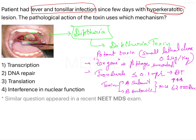The receptor for diphtheria toxin is the HB-EGF precursor — heparin-binding epidermal growth factor precursors. These serve as the receptor for the diphtheria toxin.